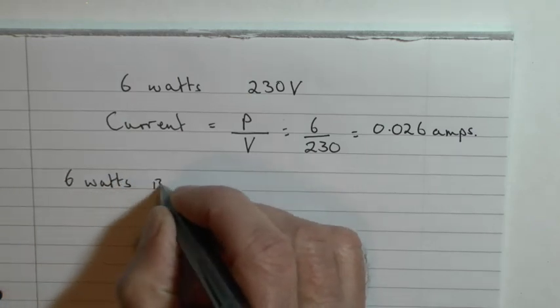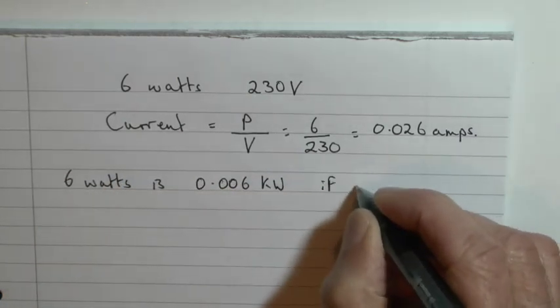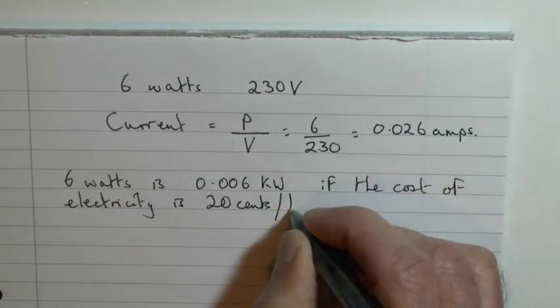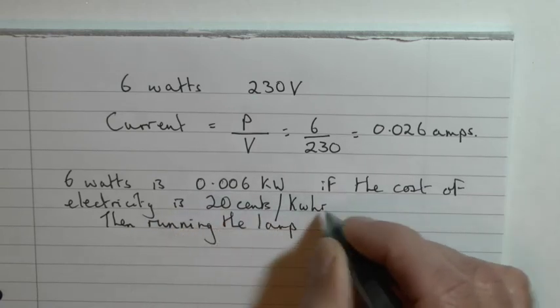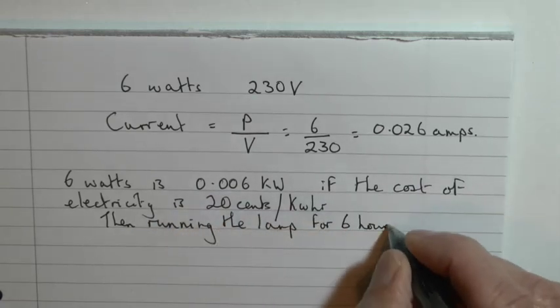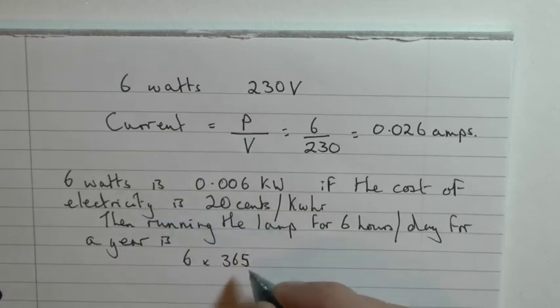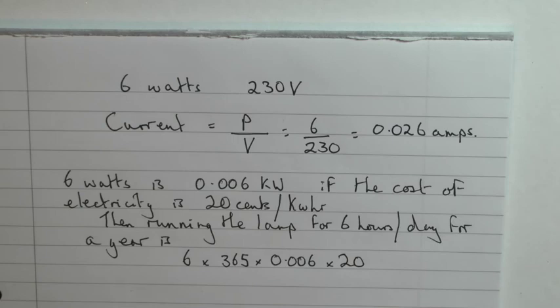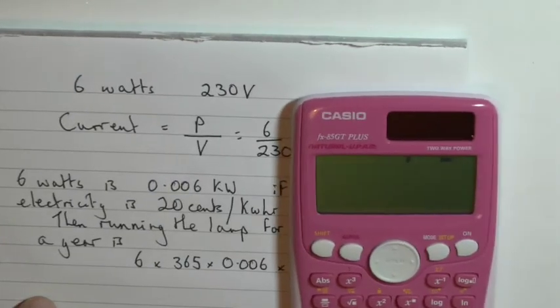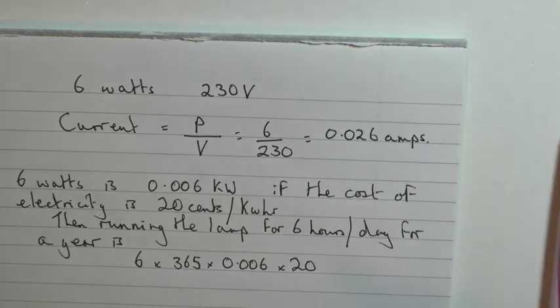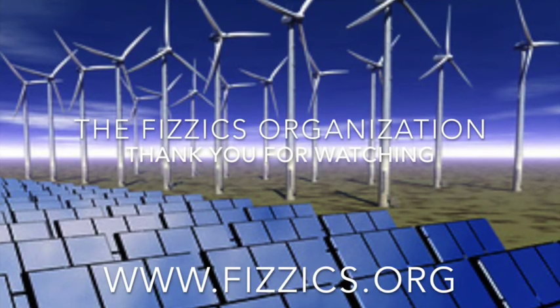Now let's estimate the cost of using this lamp for a year. Supposing it was used for 6 hours a day and that the cost of the electricity was 20 cents per kilowatt-hour, the cost of running it then for a year would be 6 hours times 365 days multiplied by the 0.006 kilowatts times 20, the 20 cents or 20 pence per hour. That would be a total of 263 cents for the whole year. Thank you for watching.